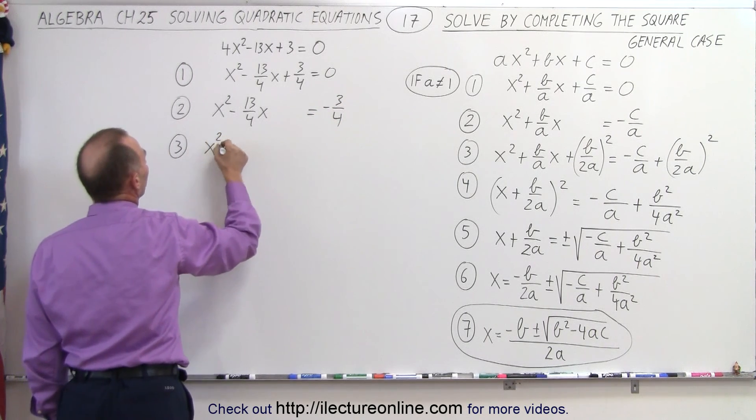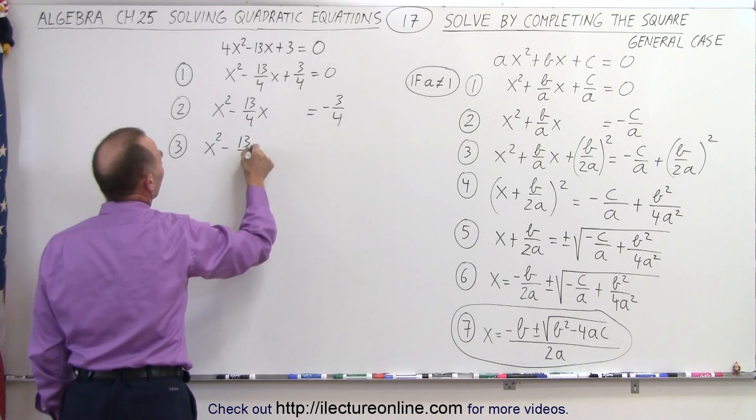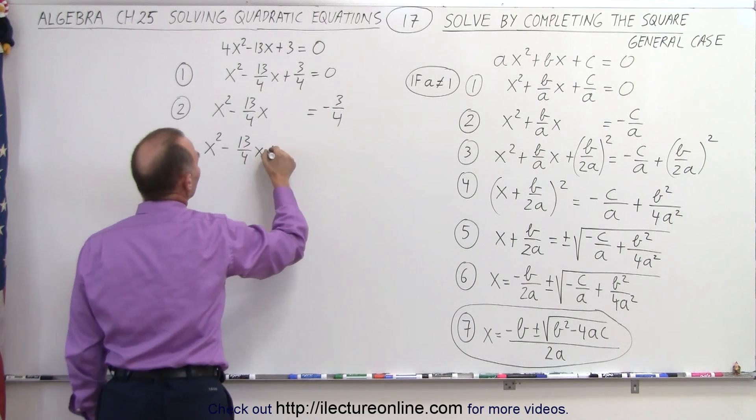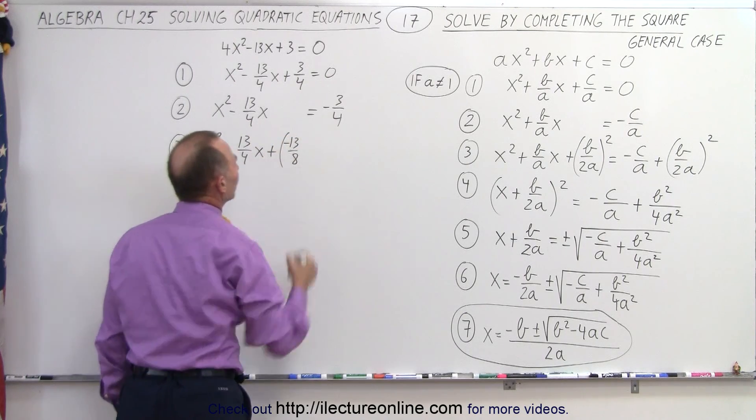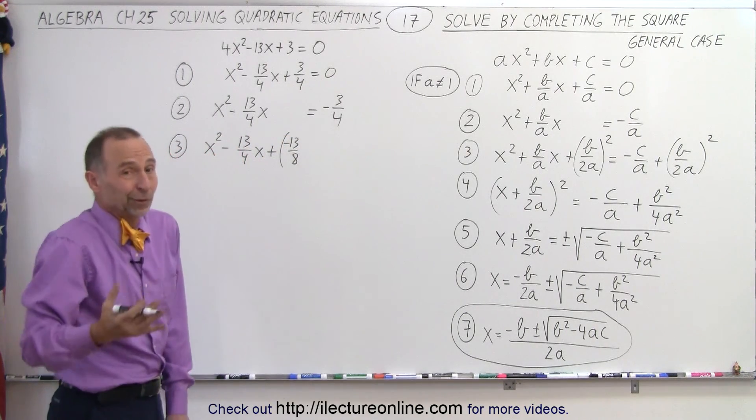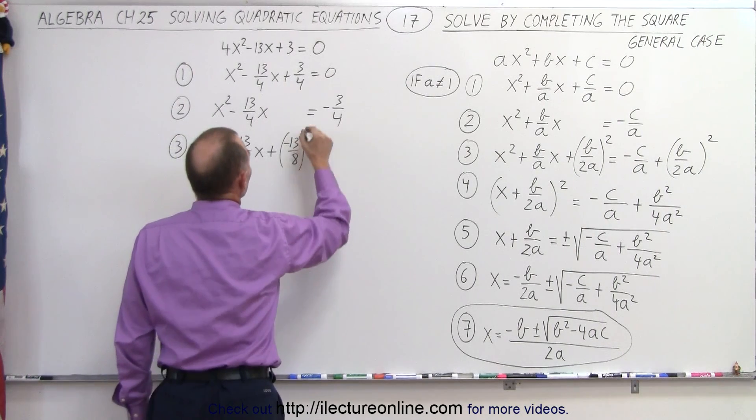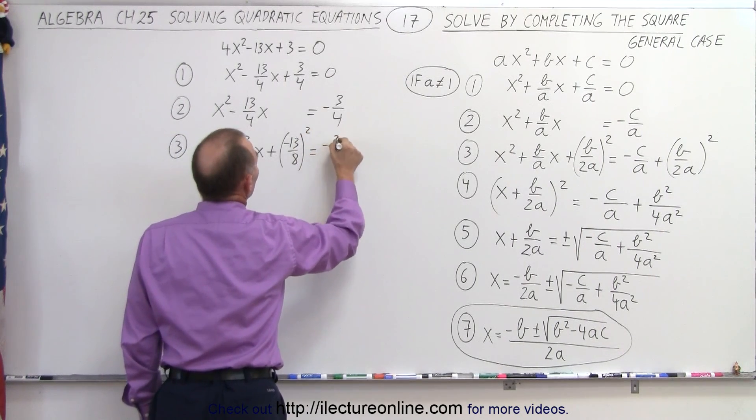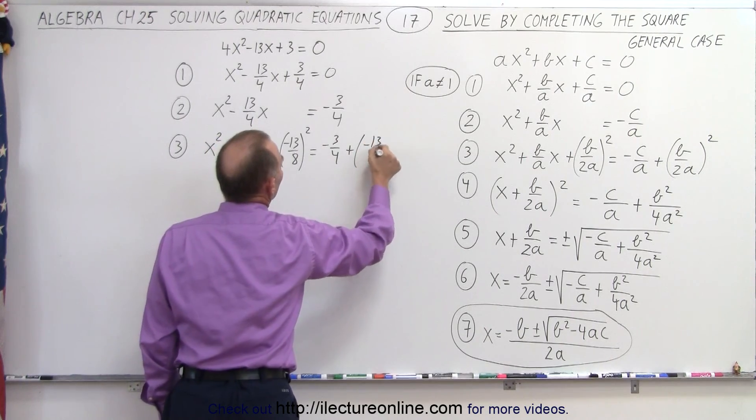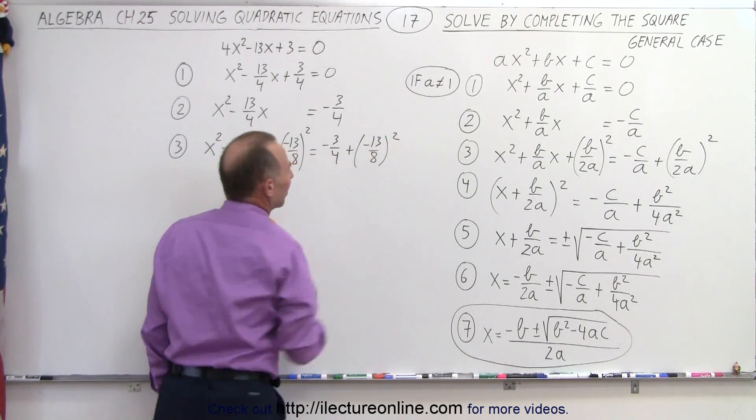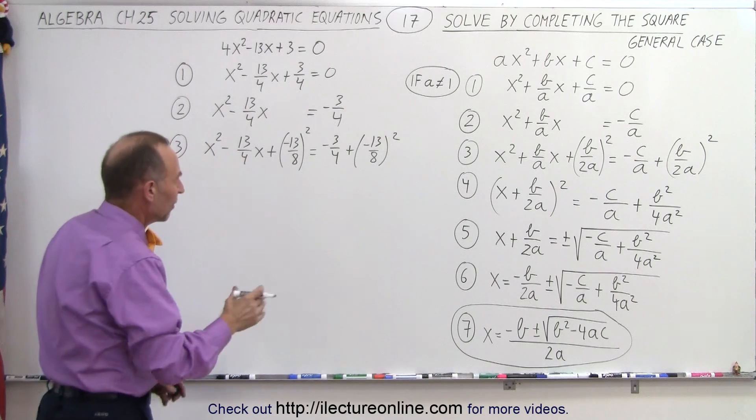What are we adding there? Half the middle term squared, and we add that to both sides of the equation. So step number 3, we have x² - 13/4x, and then we're going to add to that half of this, which is 13/8. Notice it's a negative 13/8, but we don't care because we're going to square it anyway, so the negative will disappear, equals -3/4 plus (-13/8)² quantity squared. We just put the negative there to be consistent with the methodology.